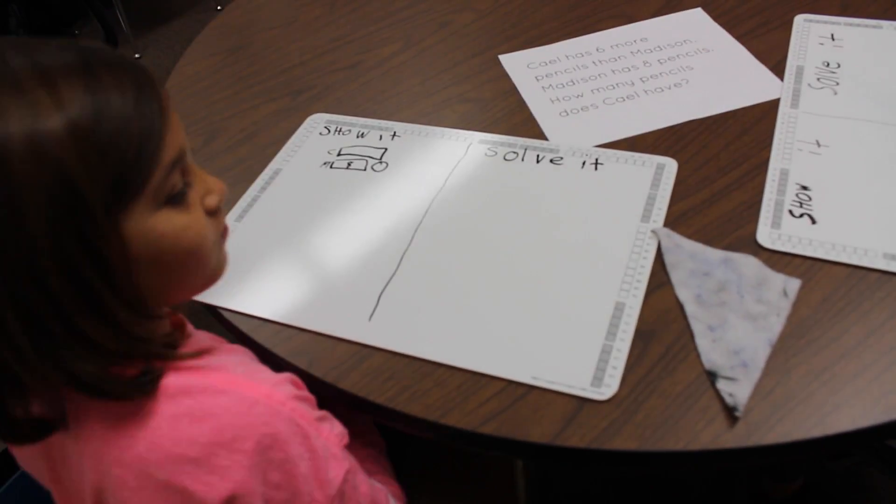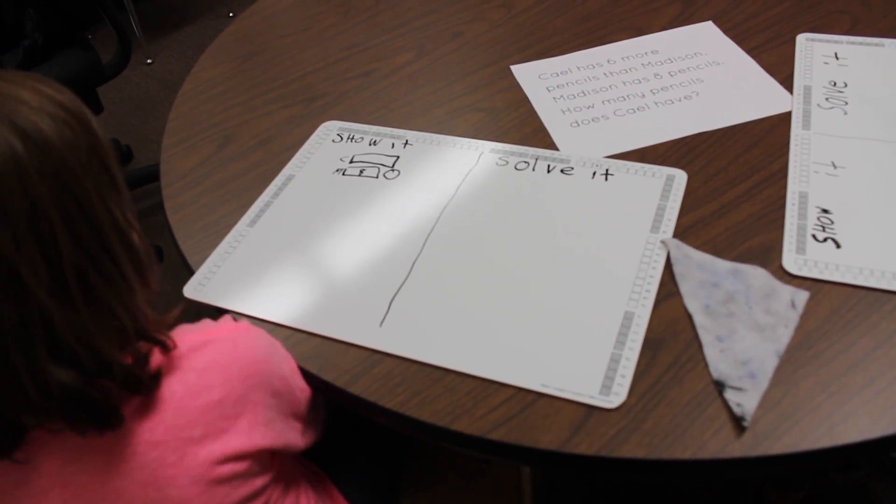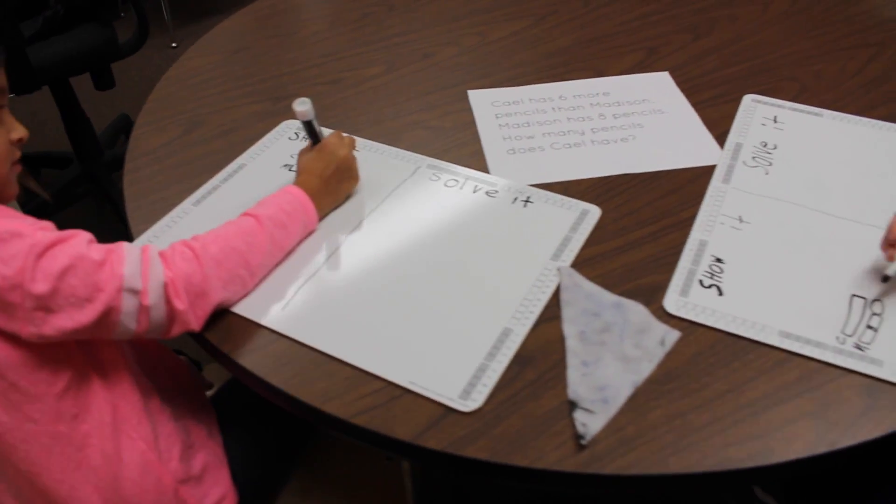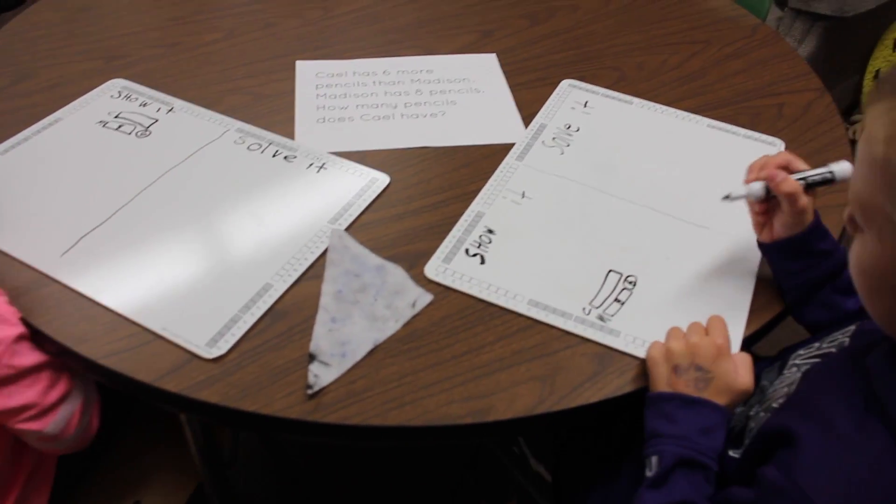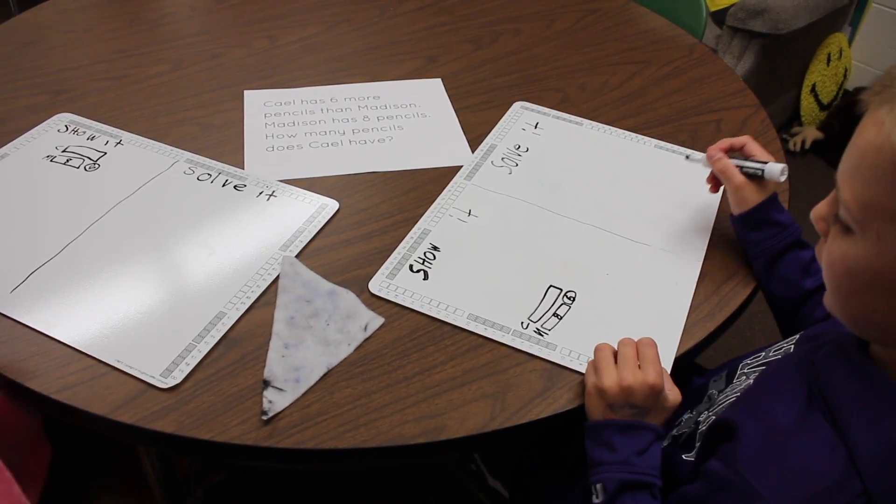Oh, so do we know how many Cal has? No. Do we know how many you have, Madison? Yes. Okay. So then the six goes in the circle because that's how many more Cal has. Oh, the difference. Okay.